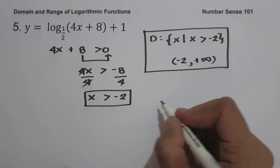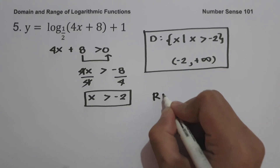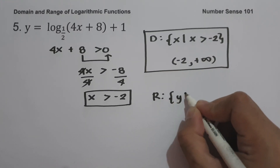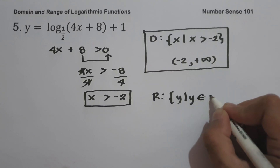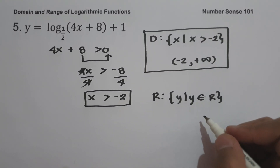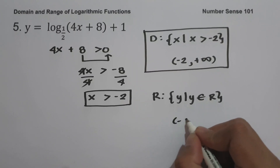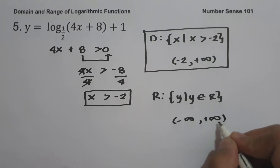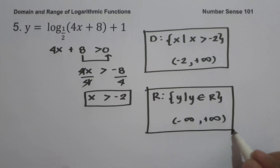To find the range of the given function: the range is the set of y values such that y is the set of all real numbers, or in interval notation from negative infinity up to positive infinity. This will be the range of the given function.